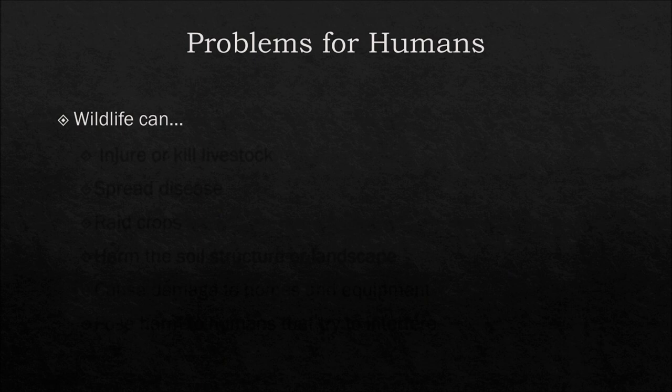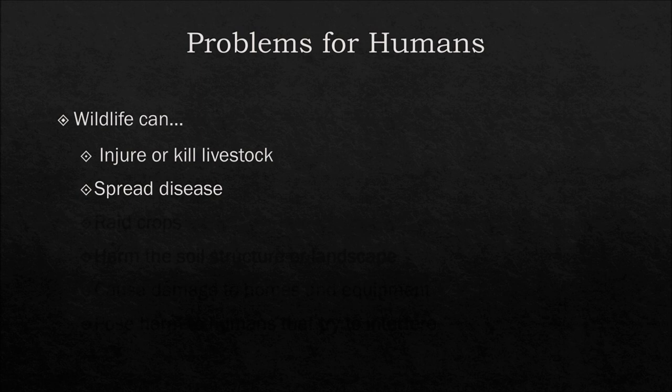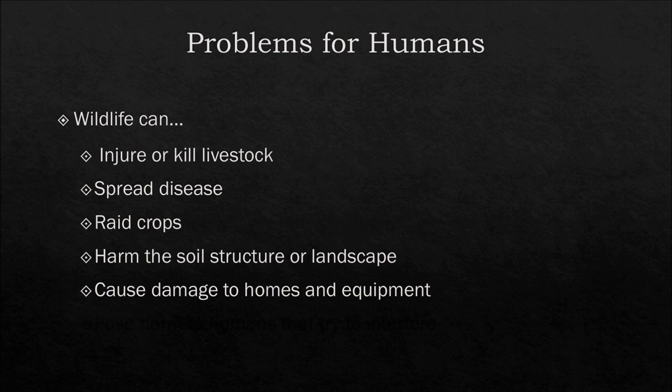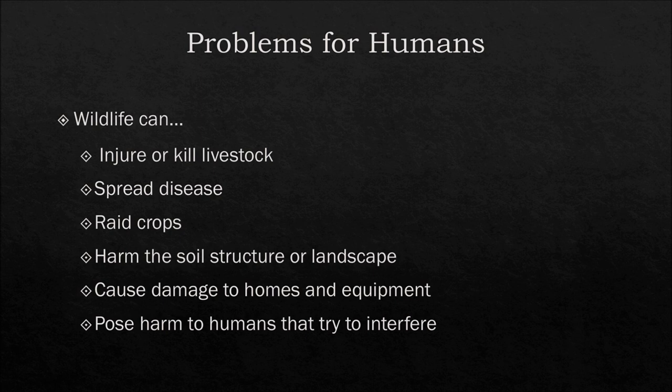There are a lot of problems for humans that can be caused by wildlife. Wildlife can injure or kill livestock. They can spread disease to not only livestock but also to humans. Wildlife can raid crops. They can harm the soil structure or landscape — by stepping through agricultural land or digging or burrowing in human land areas. They can cause damage to homes and equipment — think about rats or bugs getting inside your house. And they can also pose harm to humans who try to interfere, since wildlife is wild and can pose a lot of threats if people get personally involved.